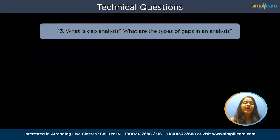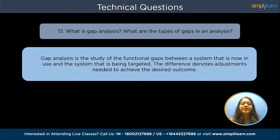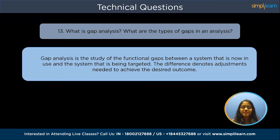Next is: what is gap analysis and what are the types of gap analysis? Gap analysis is the study of the functional gaps between a system that is now in use and the system that is being targeted. The difference between a company's actual and projected earnings is known as profit gap. The difference between actual and necessary worker strength is known as manpower gap. The discrepancy between expected and actual performances is known as performance gap, and the difference between anticipated and actual sales is known as market gap. As a business analyst, you need to know and calculate all these gaps.